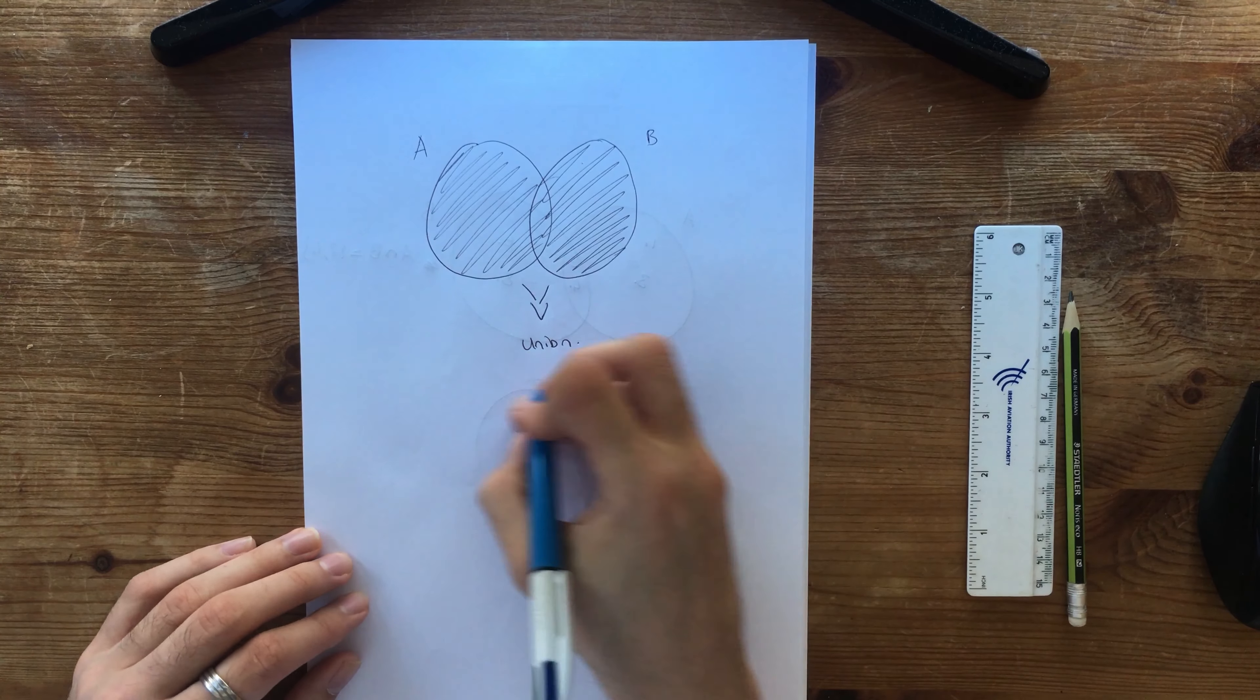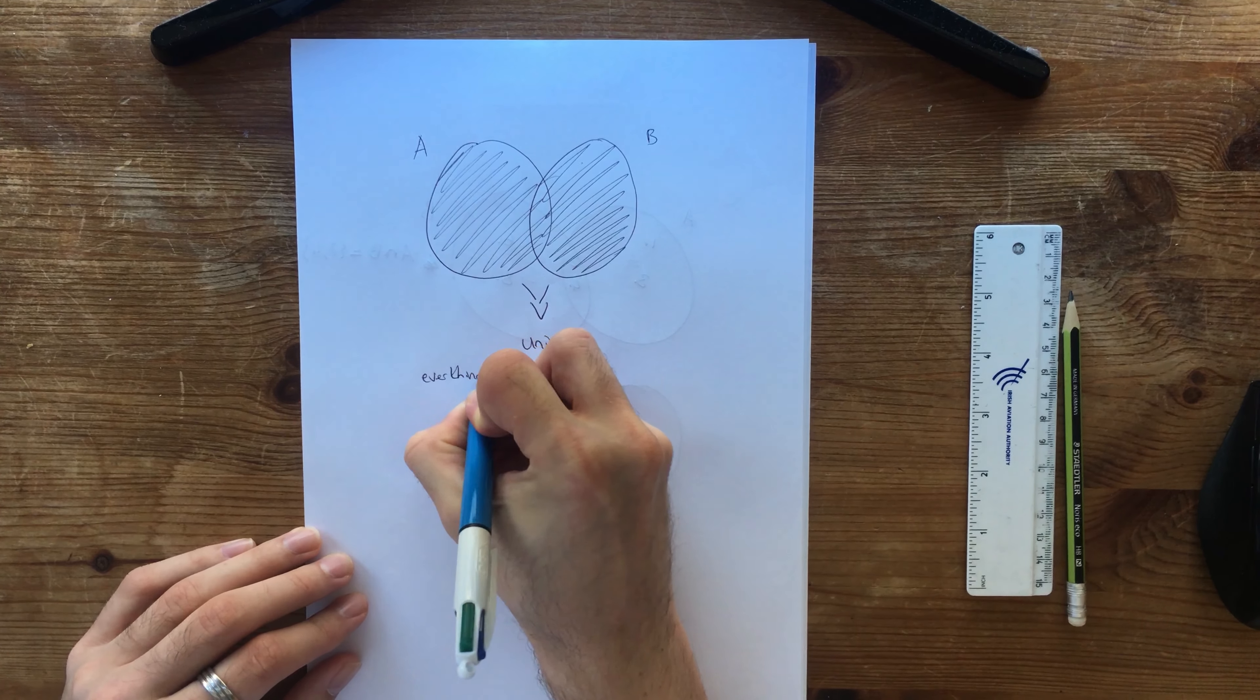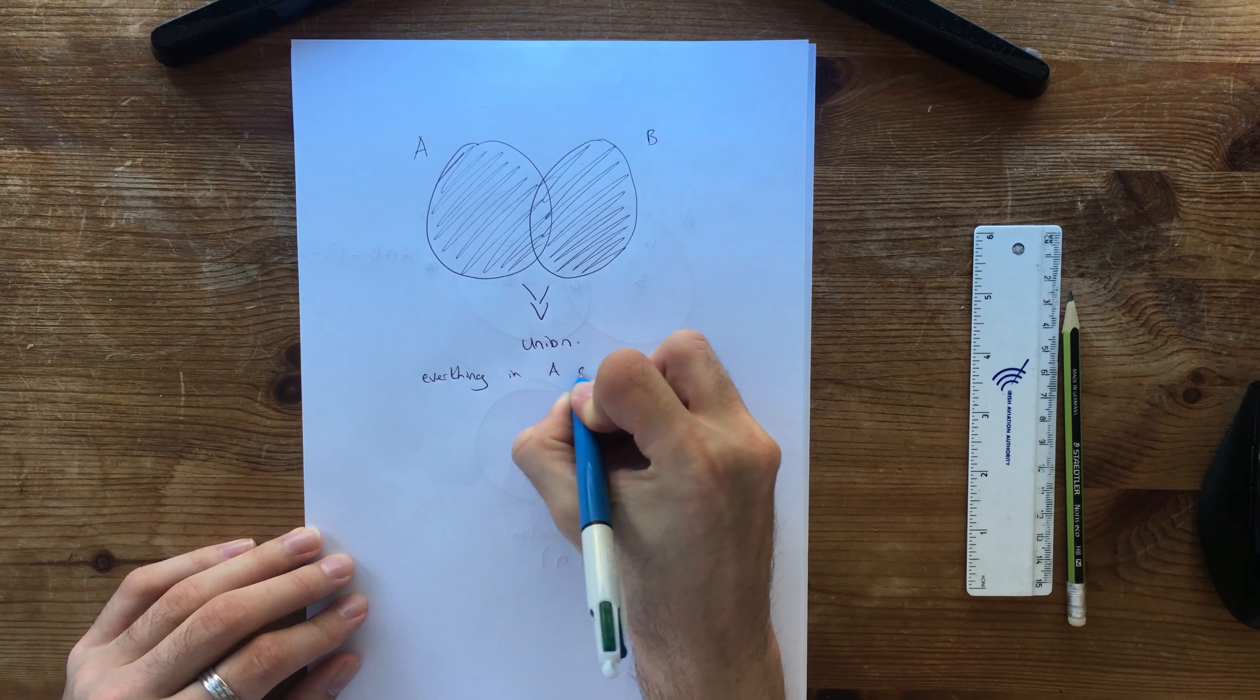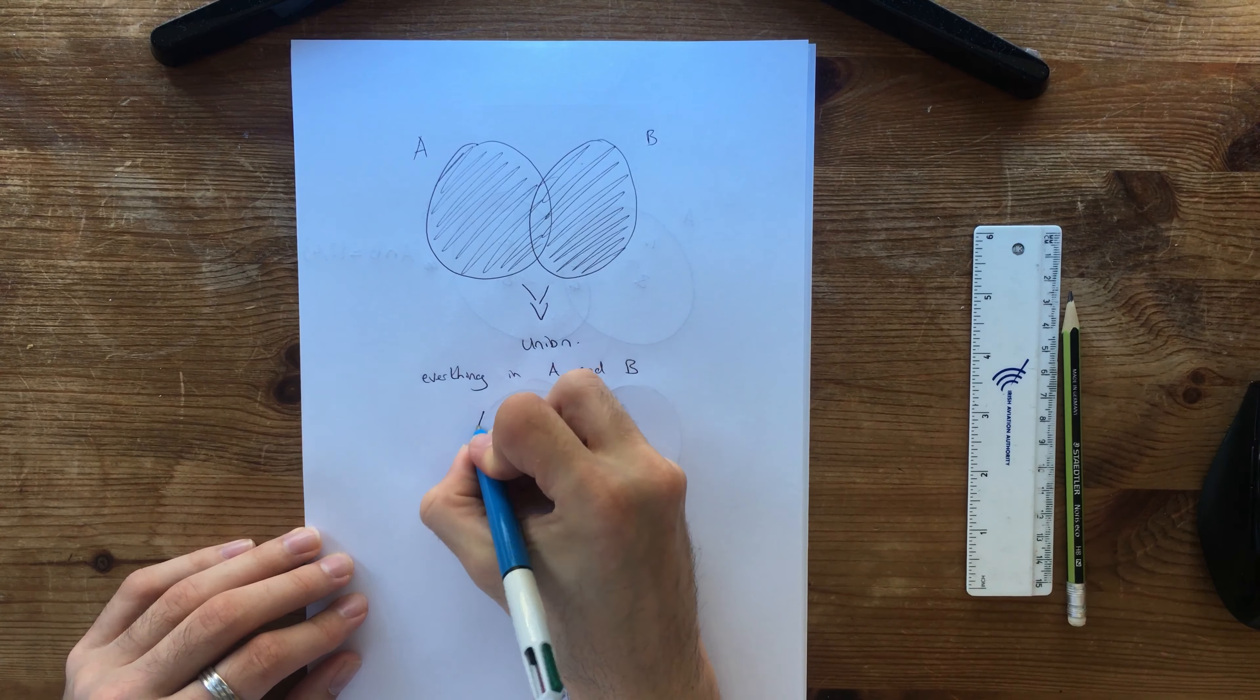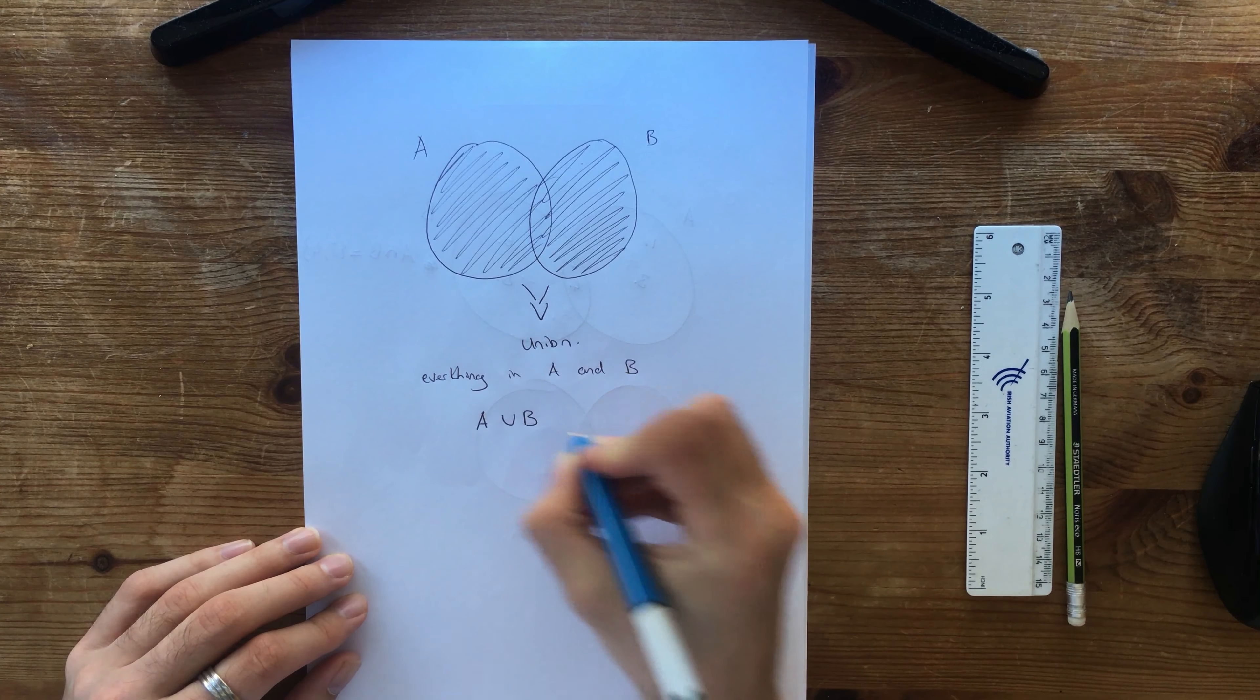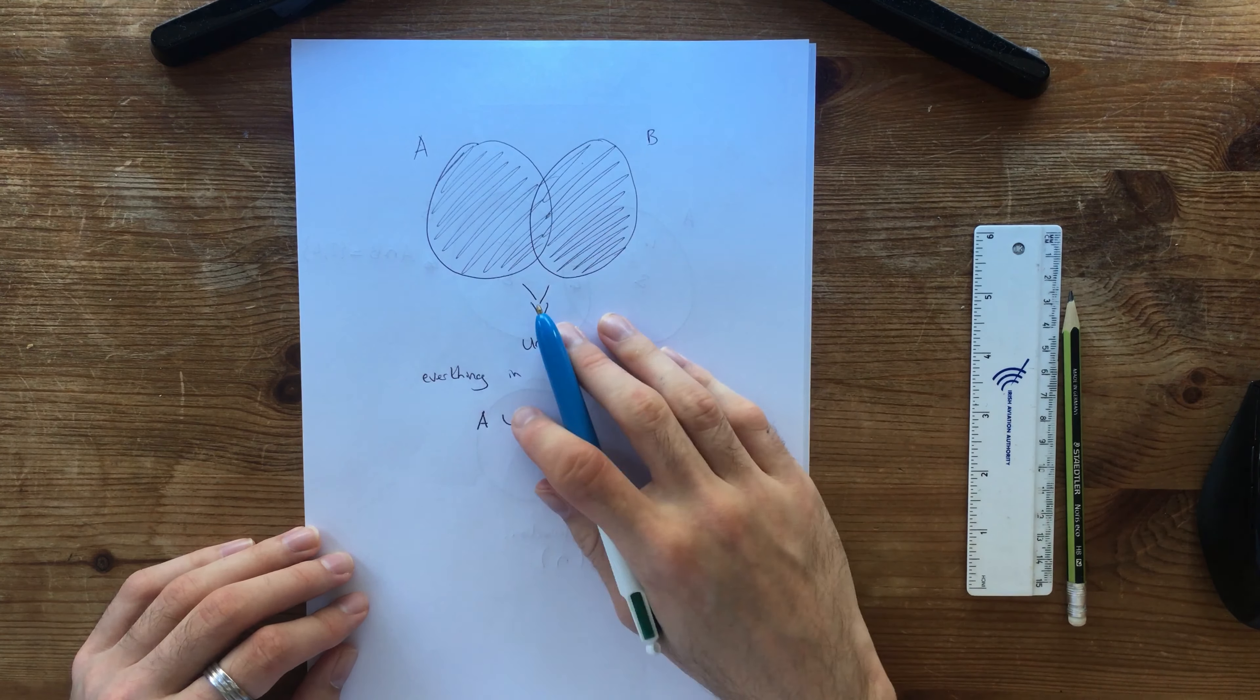So this is called, I'm going to do a dual arrow, the union. So what does the union actually mean? It means everything in A and B. And that's written like this, A union B. It's like a U. Okay. So the union is just both the sets together.